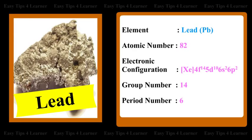For the element Lead, the atomic number is 82. The electronic configuration is Xe 4F14-5D10-6S2-6P2. The group number is 14 and the period number is 6.